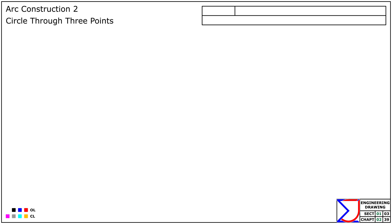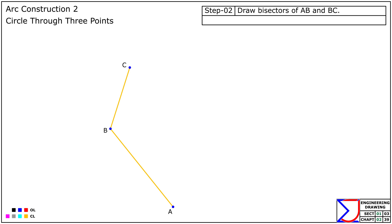Arc Construction 2: Let's learn how to draw a circle through three given points — A, B, and C. First, join the points A to B and B to C, forming two line segments AB and BC. Now draw the perpendicular bisectors of AB and BC.